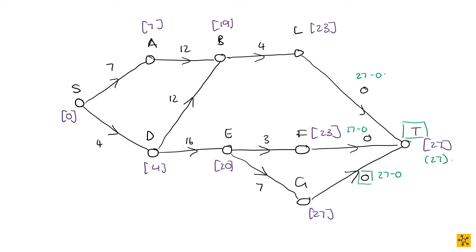So next up, we now have the latest start time for T. We take this latest start time of 27, and we're going to go to G. So you have your latest start time of the predecessor — the 27 — and you're going to minus the 7 that it takes to get to G. You want to find the latest start time for G, which means you're going to have to subtract the time it takes to actually do G. So 27 minus 7 is 20. The latest start time for G is at time unit 20.